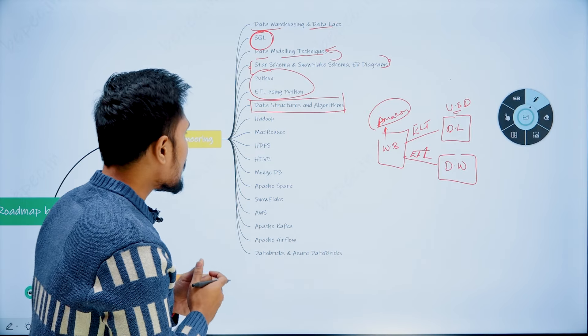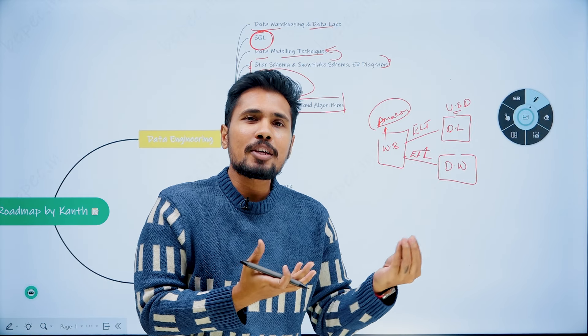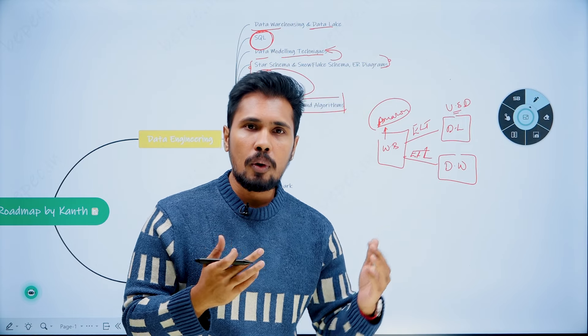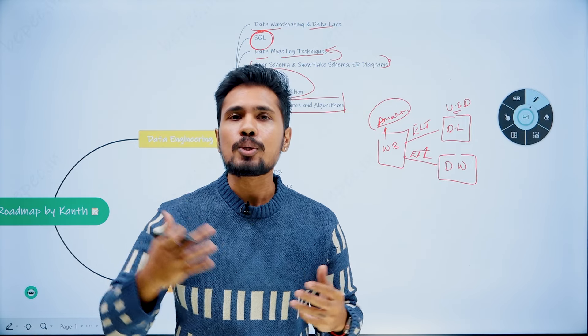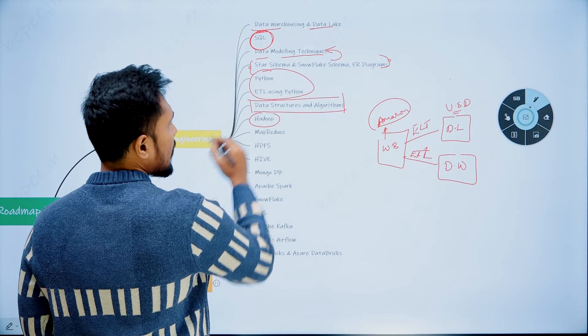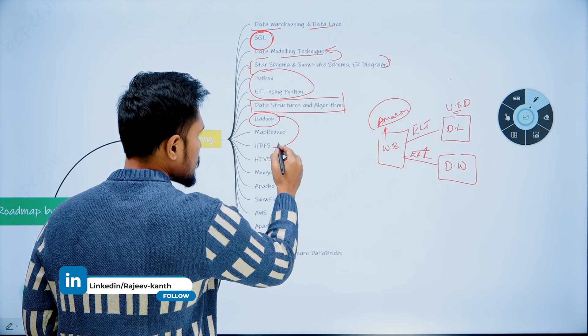And then all the data we are storing in the real world may not be small data. It would be a huge amount of data which comprises of huge volume, huge velocity, and huge variety. How we can store all that huge amount of data is with Hadoop. Based on Hadoop ecosystem, we have a data lake, which is HDFS.